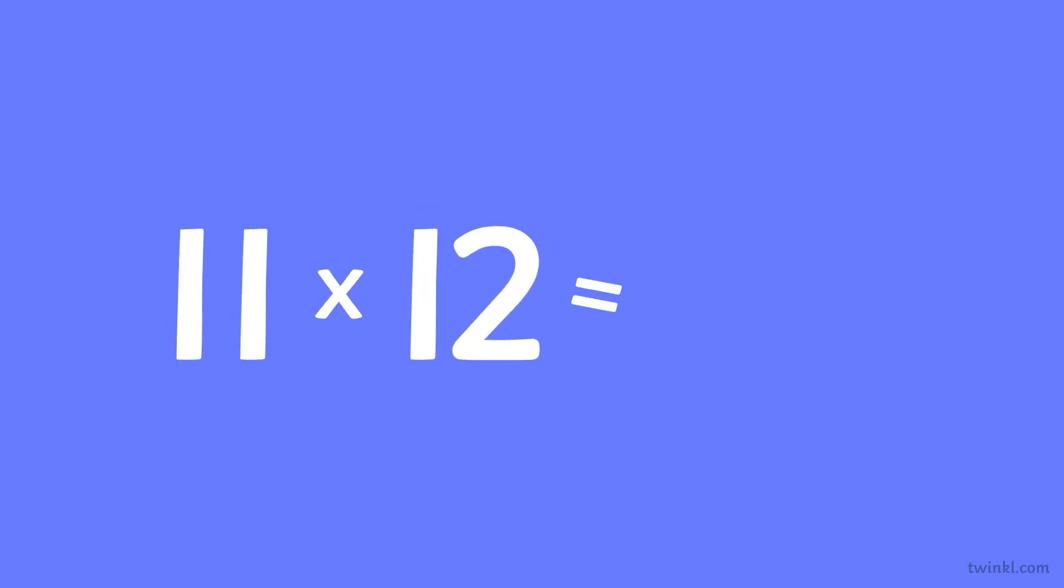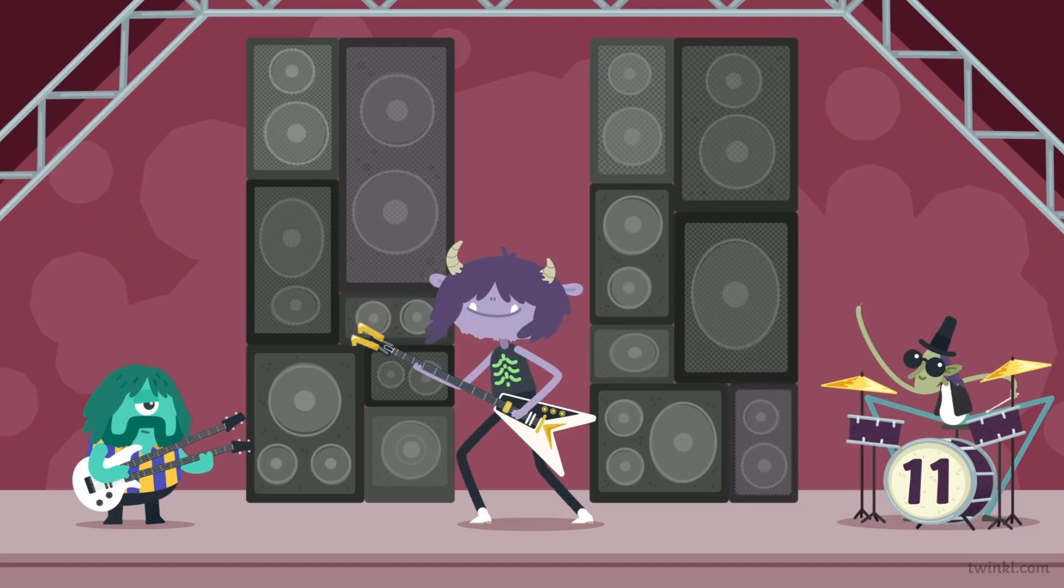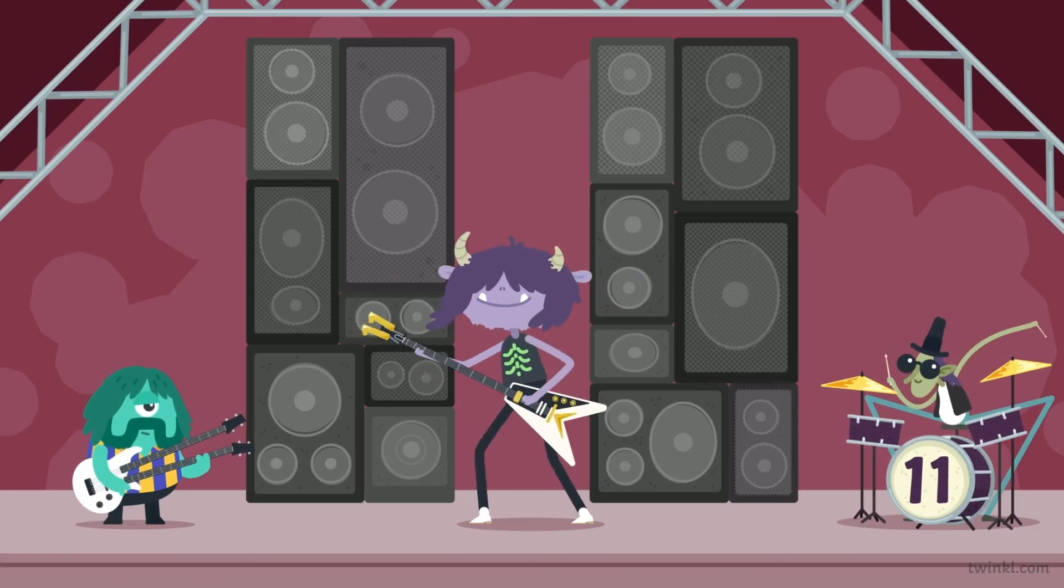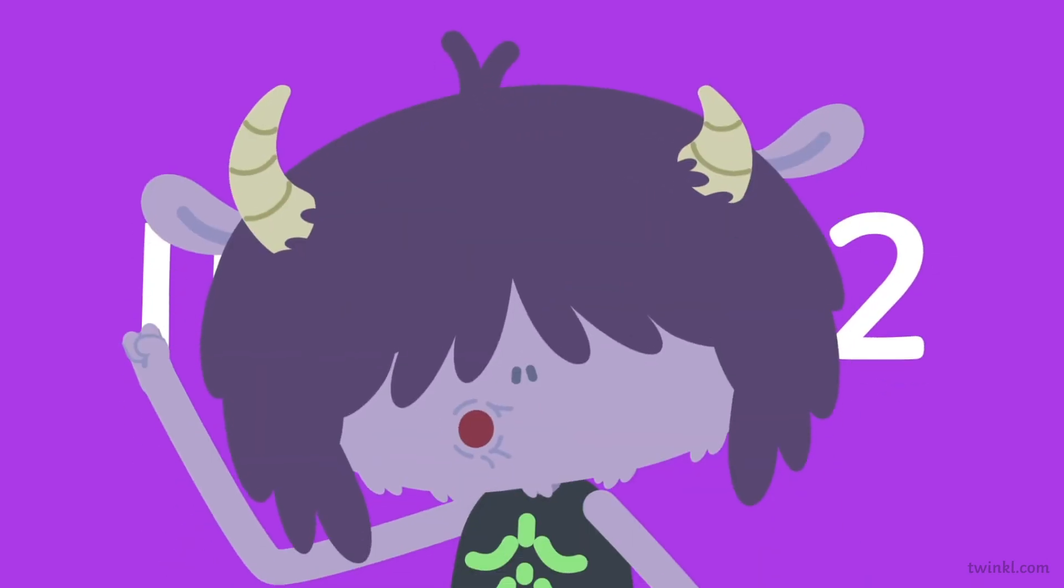Eleven times twelve is one hundred and thirty-two. A big number, but not so tough. You try it with me, a monster roar! Eleven times twelve is one hundred and thirty-two.